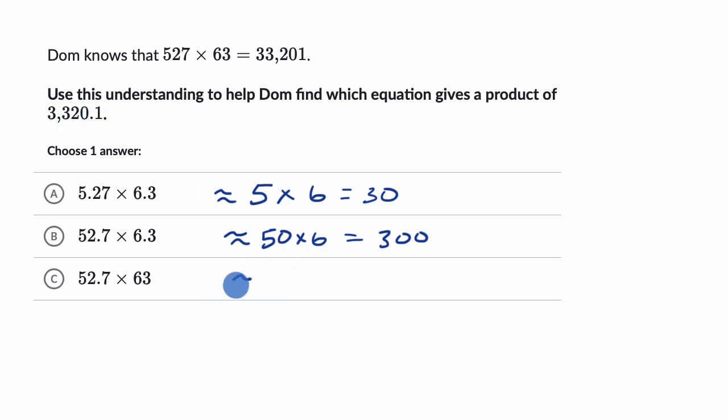So if I were to say this is approximately equal to 50 times 60, 5 times 60 is 300. So 50 times 60 is 3,000. Well, this is pretty close. 3,000 is not off by a factor of 10 from 3,320.1. So I already like this choice.